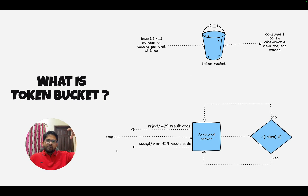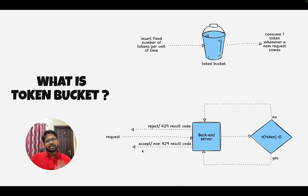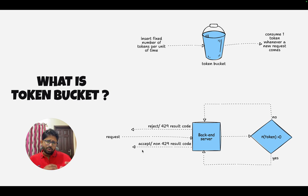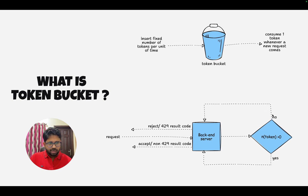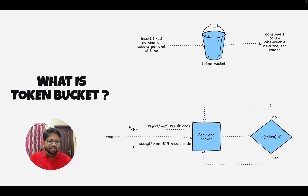At a very high level, you have a backend server and somebody makes a REST API call. The first thing you do is check: do you have enough tokens or not? If the number of tokens is greater than zero, you accept the request and give a 200 or any accepted response — not a 429. If there are not enough tokens, the number of tokens is not greater than zero, you reject the request and give a 429 response, which corresponds to too many requests.